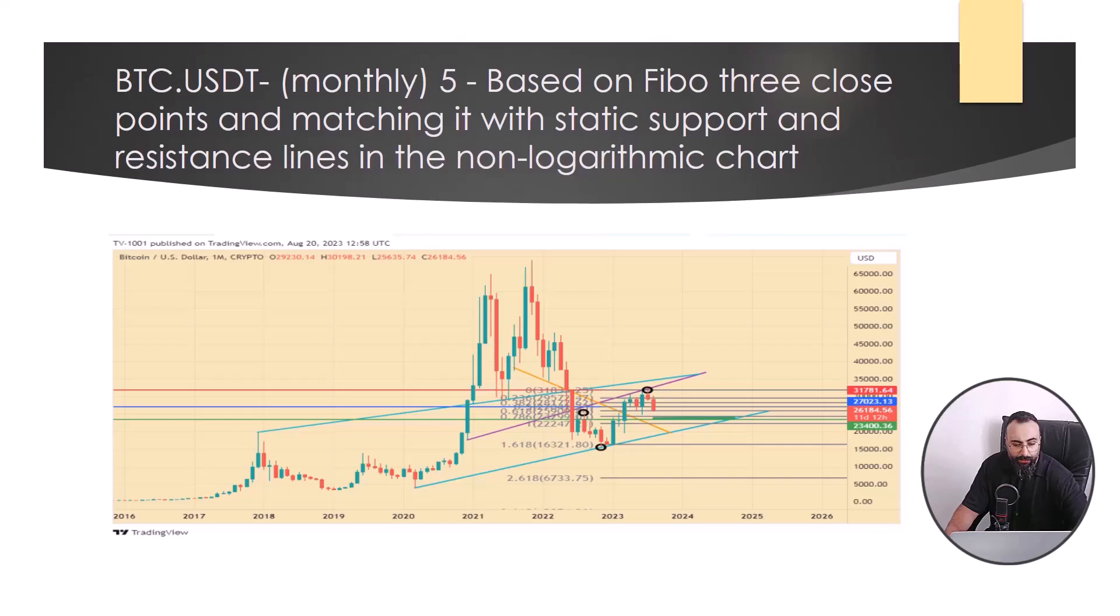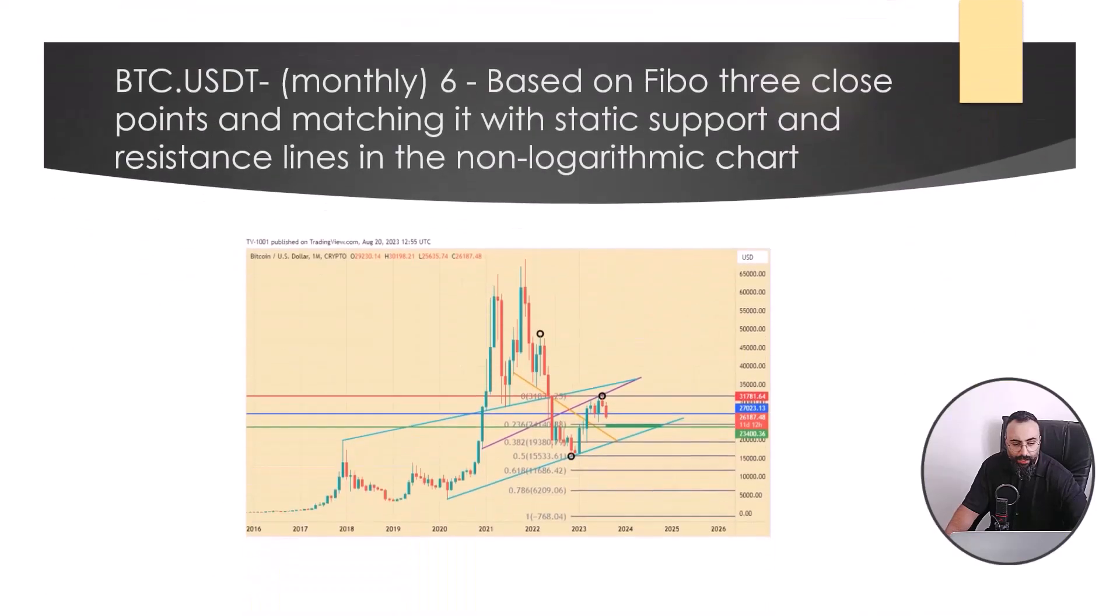Another analysis based on FIBO three close points and matching it with the static support and resistance line. In this figure, after breaking the blue static support, it can be seen that in this three-point FIBO, there is no gray support corresponding to FIBO level until reaching the level highlighted in gray. This could mean that the support of the near-term FIBO level of the previous chart is likely to be broken. The first support level of this FIBO will be the level of 0.236 and close to the green static support. The proximity of these two support lines to each other increases the importance of the highlighted zone.